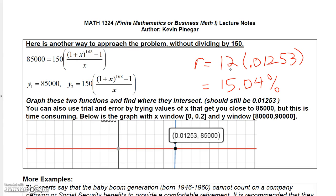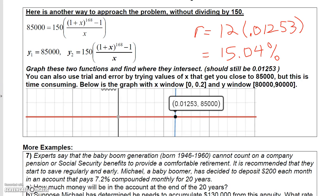As a percent, that's 15.04% — and that's how you solve for the rate. There's another way where you don't have to divide both sides by 150, but you can read that on your own. The rest of the examples you can also read on your own.